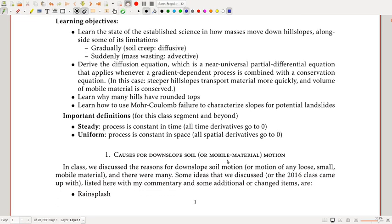And I have a few major learning objectives, and I think it's important to go over these. So, the first thing I want is for you to learn the state of the established science, and how masses move down hillslopes, as well as some of their limitations. And so there are a couple of major ways in which this happens. The first one is gradually via soil creep, and this is a diffusive process, which means, spoiler alert, we're going to be solving a diffusion equation. If you don't know what that is, this is one of perhaps the most commonly found differential equations, partial differential equations, in all of natural world observations. It's common across heat transfer, for mass transfer, chemistry, biology. It's just a good thing to know in general. And so we're going to introduce it in terms of hillslopes, and talk about why it ends up being such a common equation that we see everywhere.